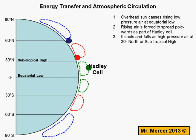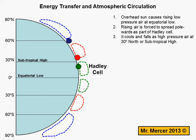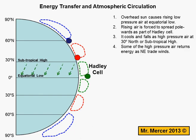At 30 degrees north, otherwise known as the subtropical high, the warm air begins to cool and therefore sinks. Falling air pushes on the Earth's surface and is referred to as high-pressure air. Some of that air, as you can see, returns into the Hadley cell. We call the returning air the northeast trade winds, which you can see blowing from 30 degrees to 0 degrees on your diagram.